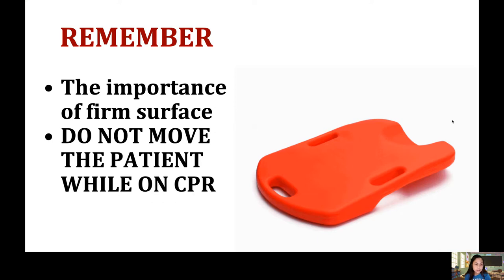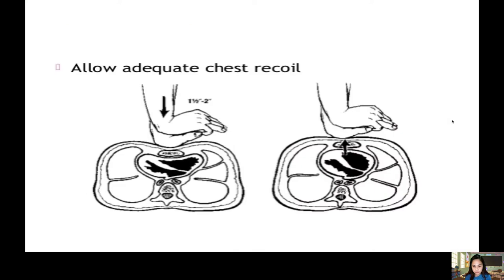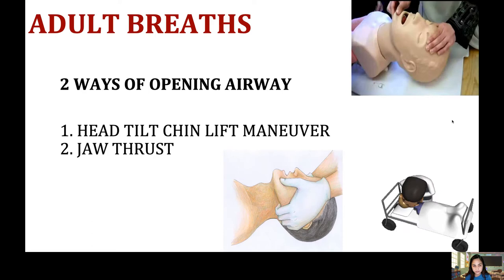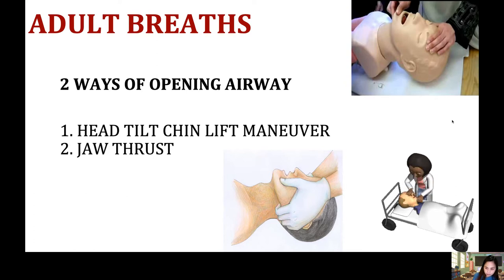Remember the importance of a firm surface — do not compress the patient on a soft surface. Place the patient on a flat, hard surface so compressions are effective. After compressions, give two breaths. There are two ways to open the airway: if the patient has no spinal cord injury, use the head tilt-chin lift maneuver. If spinal cord injury is suspected, use jaw thrust to avoid hyperextending the neck.